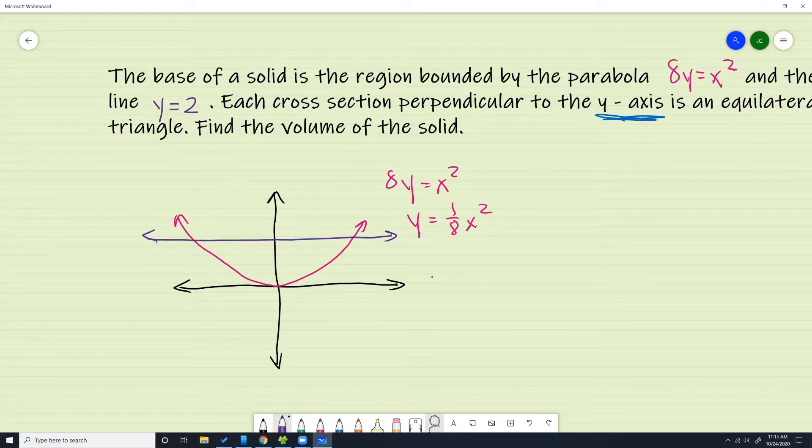They say each cross-section is perpendicular to the y-axis. So the base of each triangle goes from right all the way to the left, right minus left like this.